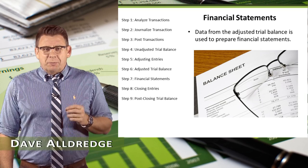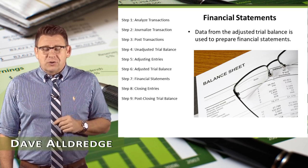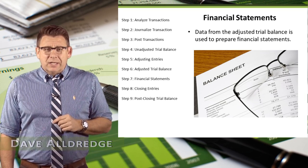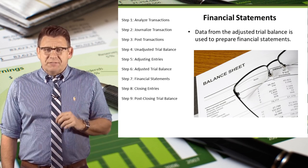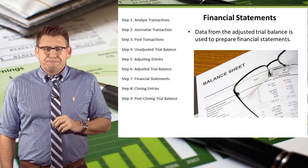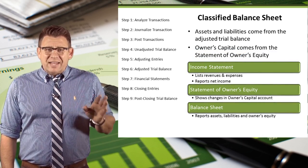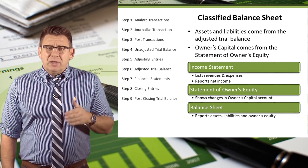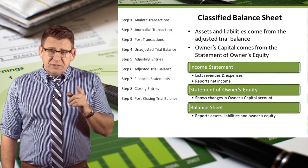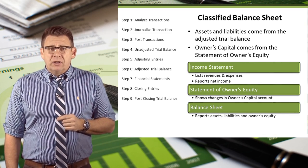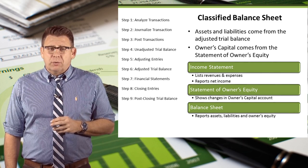The financial statements are prepared directly from the adjusted trial balance. The focus of this video is the classified balance sheet. The balance sheet includes a company's assets, liabilities, and equity accounts — specifically the ending owner's capital, which comes from the statement of owner's equity.